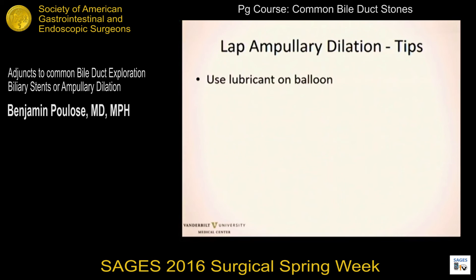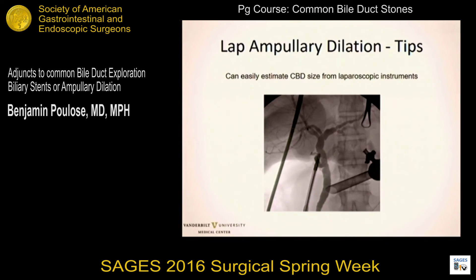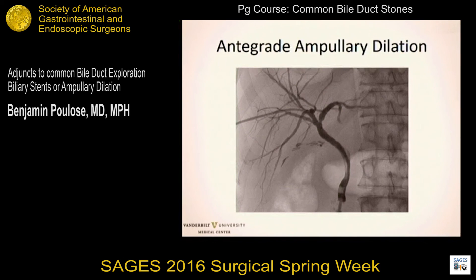Some tips: use lubricant on the balloon, which helps pass through the cystic duct. Dilate the cystic duct if necessary, though there's less of a need when doing ampullary dilation. Key point: ensure the wire is well into the duodenal sweep to avoid perforation, and follow the balloon carefully under fluoroscopic guidance. Here's an easy way to estimate sizes: use your laparoscopic instrumentation. For example, 5-mm instruments on screen left and a 10-mm cannula on screen right allow you to estimate that the common hepatic duct is about 9 mm and about 5–6 mm distally, guiding your balloon size selection.